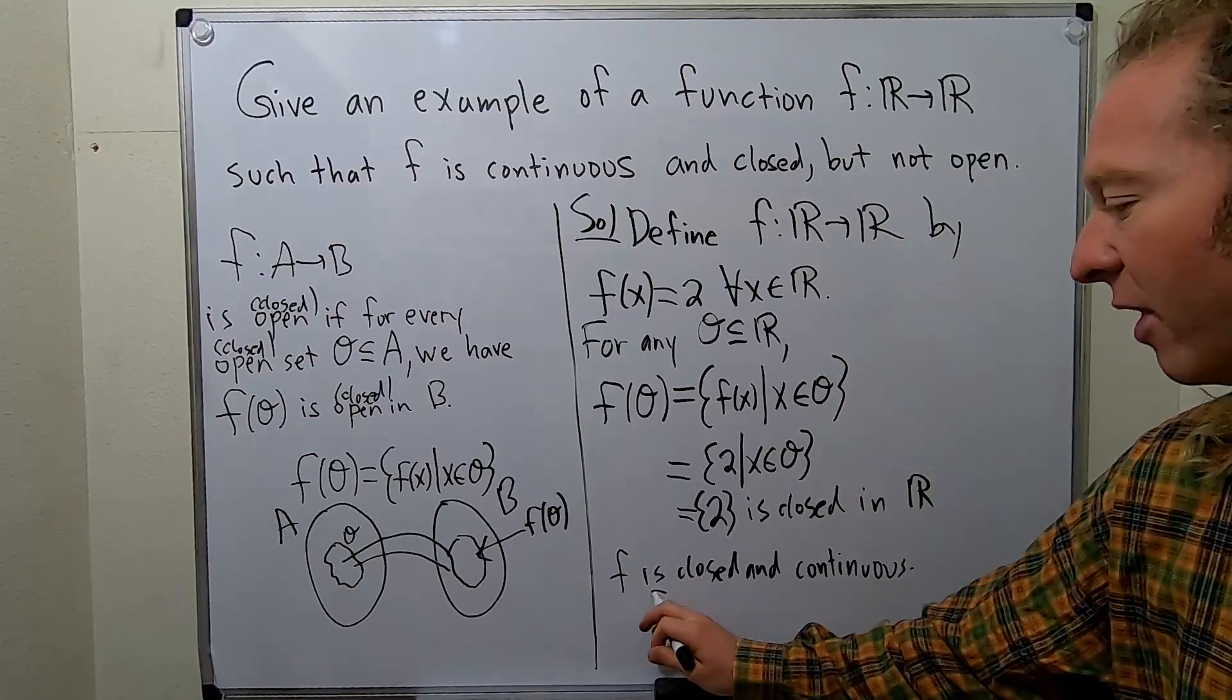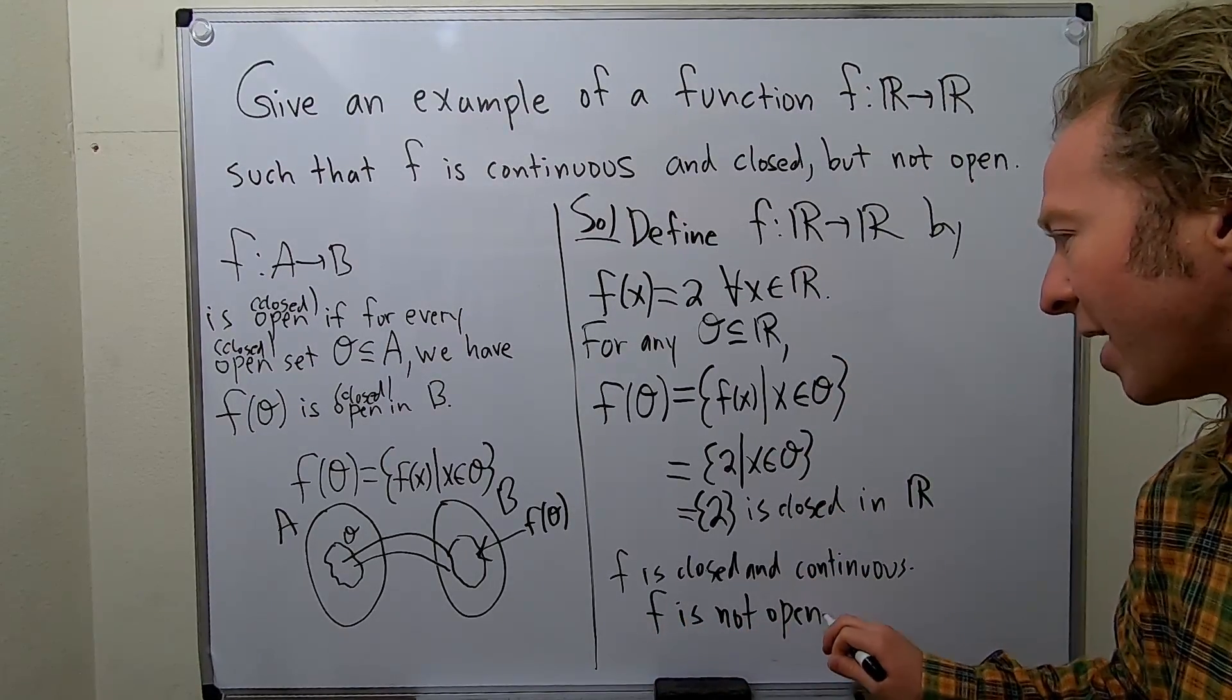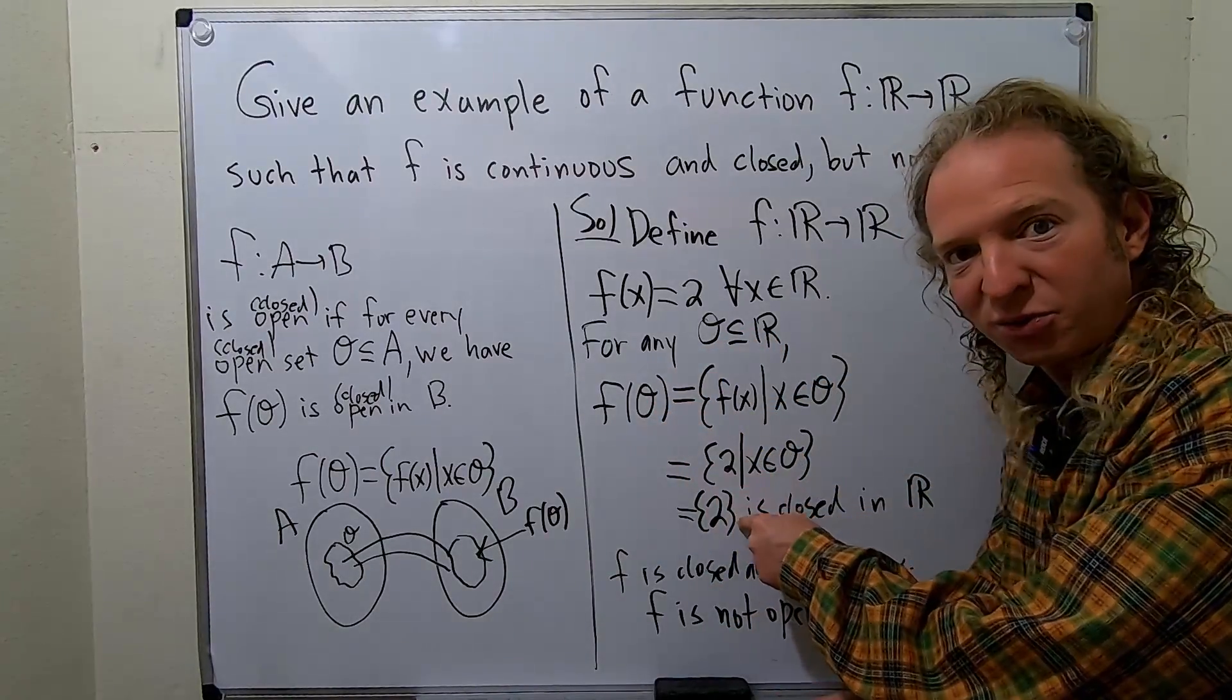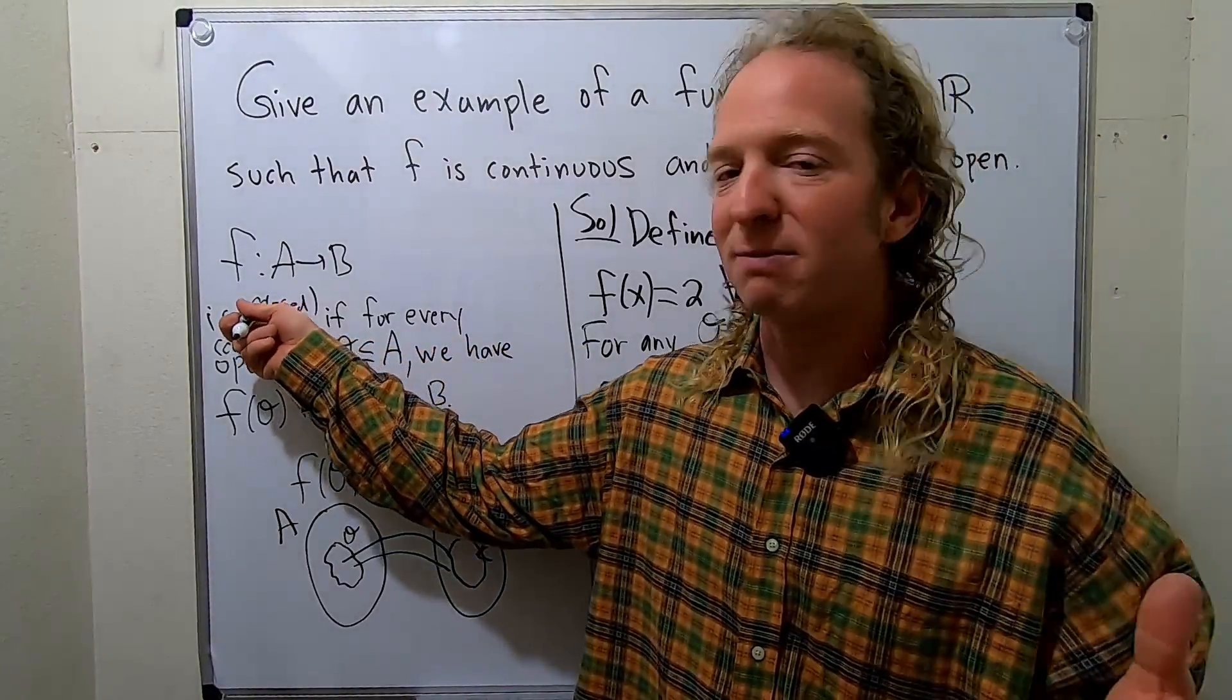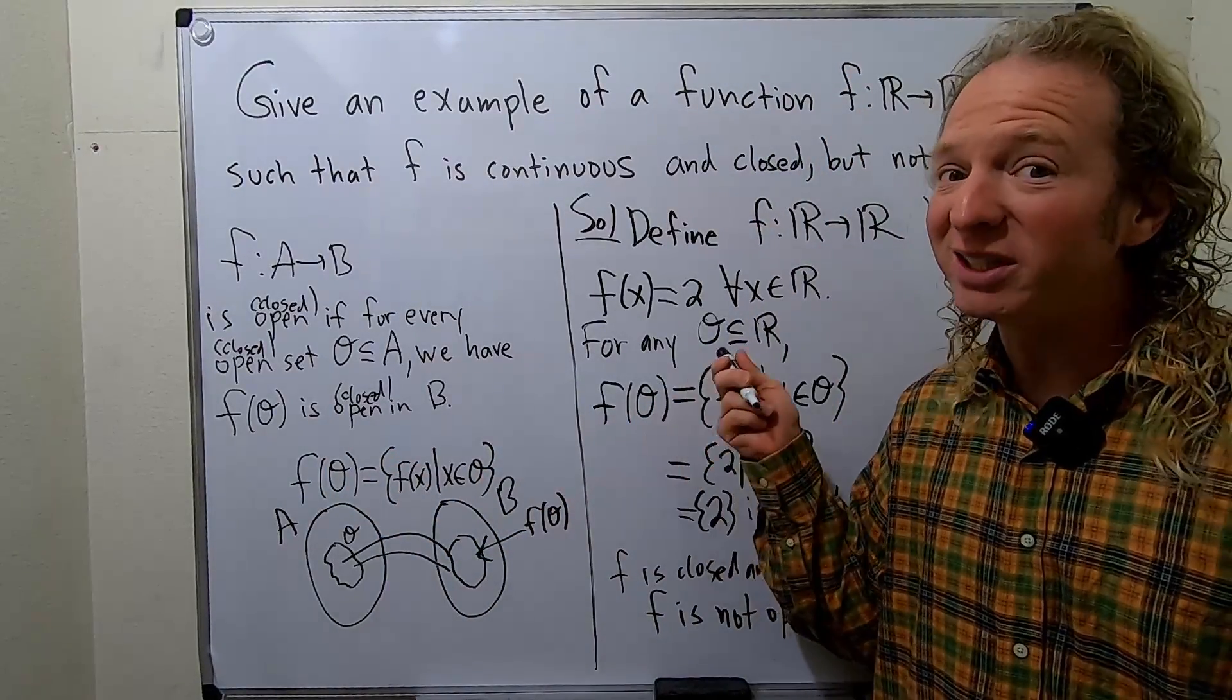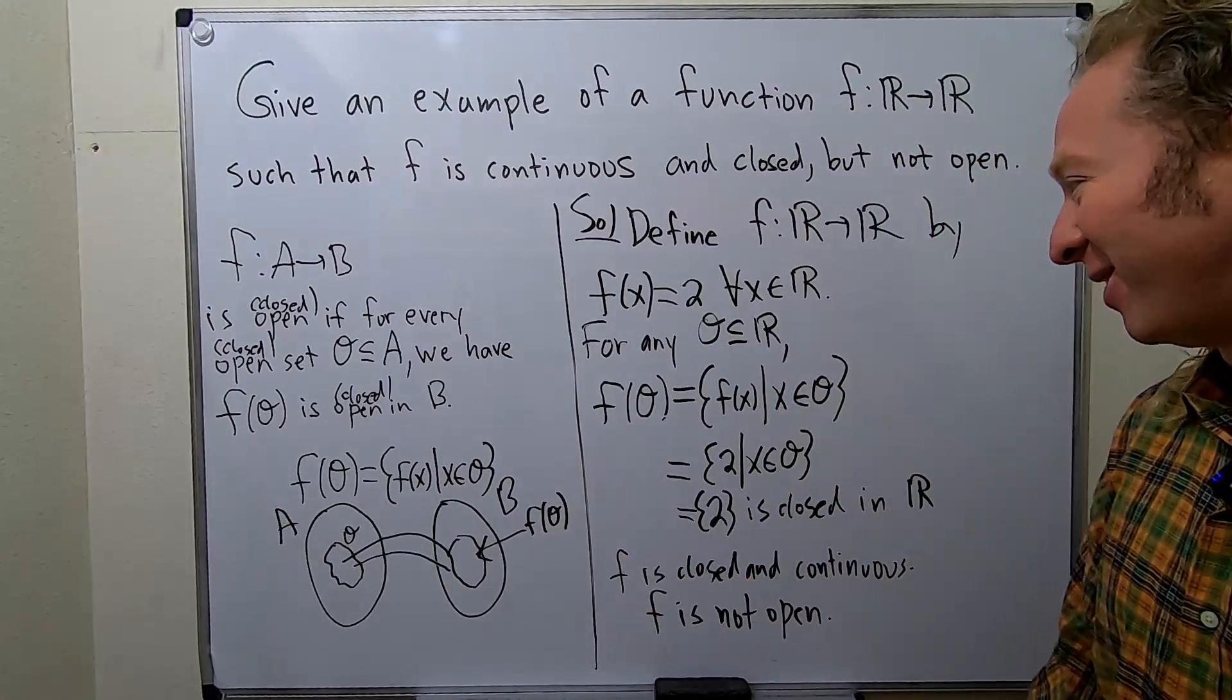And it's obviously not open. So f is not open. And the reason it's not open is because if you take any open set, it's going to be closed, right? In order for it to be open, it has to map open sets to open sets. It doesn't do that. In fact, it maps every single set into a closed set. So it's like a super closed function.